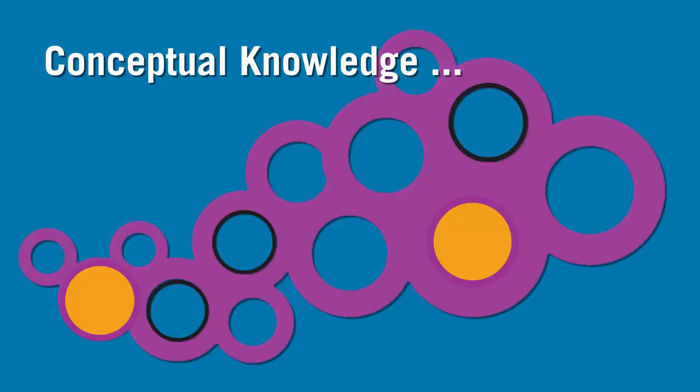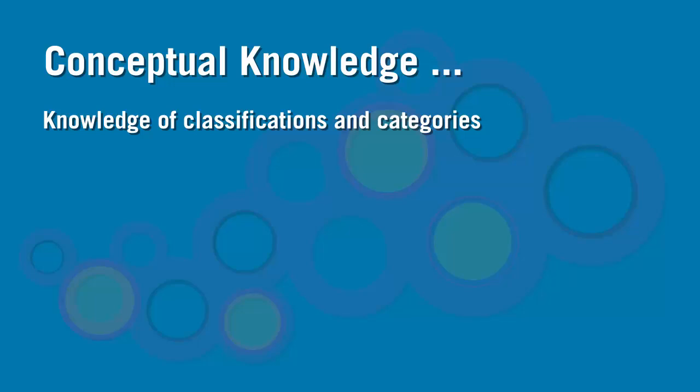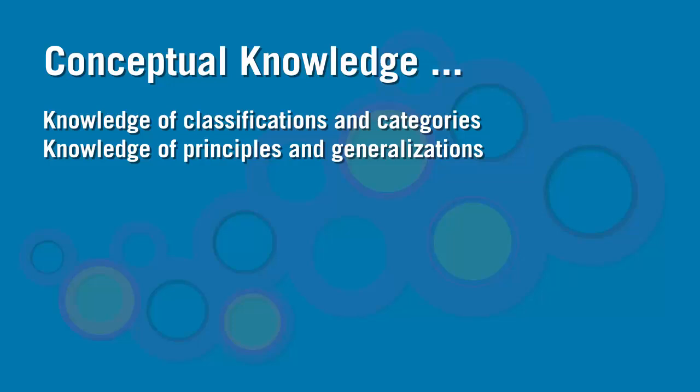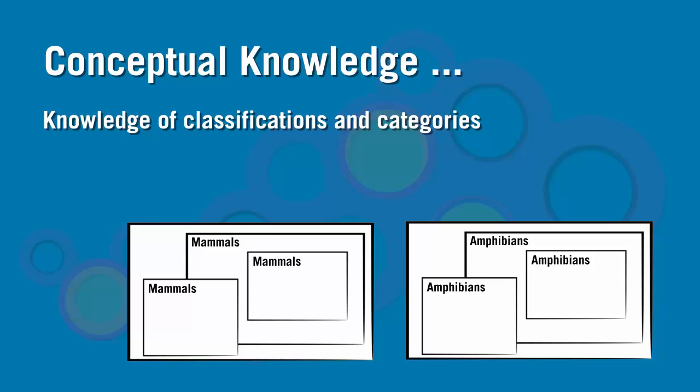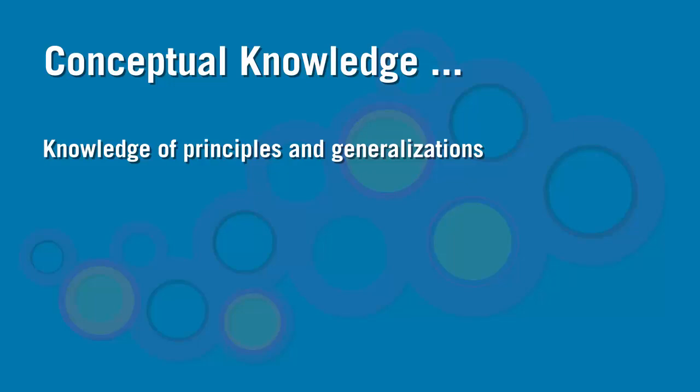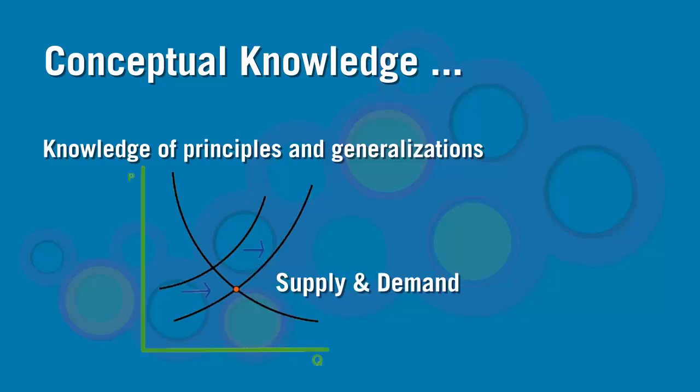Anderson tells us that conceptual knowledge relates to the interrelationships among the basic elements with a larger structure that enable them to function together. Anderson identifies three subcategories of conceptual knowledge: knowledge of classifications and categories, knowledge of principles and generalizations, and knowledge of theories, models, and structures. An example of knowledge of classifications or categories may be the types of amphibians or mammals. An example of knowledge of principles and generalizations may be the law of supply and demand.